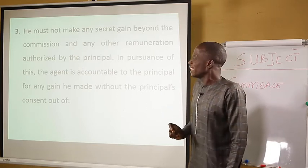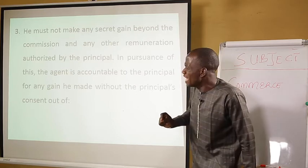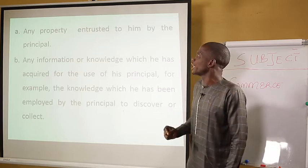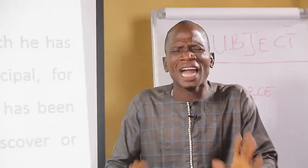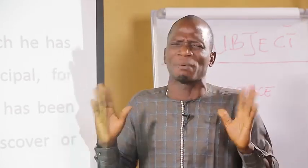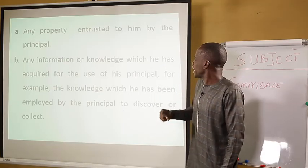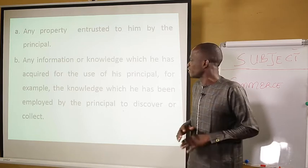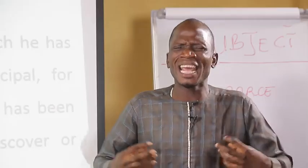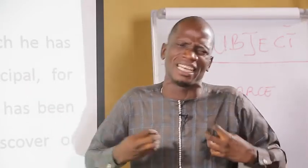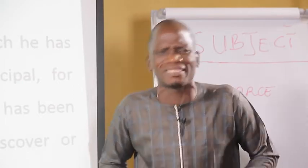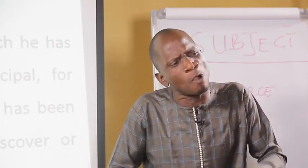The third duty is he must not make any secret gain or profit. An agent is not expected to make any secret transaction without the knowledge of his principal. You are only employed to work on behalf of someone, therefore you are not supposed to do something outside the terms of agreement reached between you and your principal. The agent is accountable to the principal for any gain he made without the principal's consent out of any property entrusted to him. Any information or knowledge acquired for the use of the principal should be used for that purpose only.